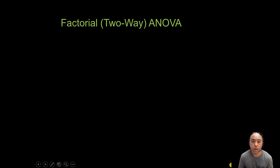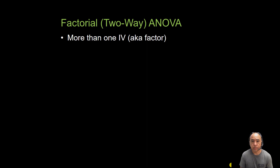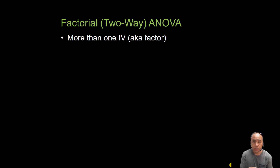In this video, we're going to talk about a factorial or two-way ANOVA. A two-way simply means there are two independent variables involved in the analysis of variance. I talked about a one-way ANOVA or a one-way repeated measures ANOVA, and in those two cases there's only one independent variable involved.